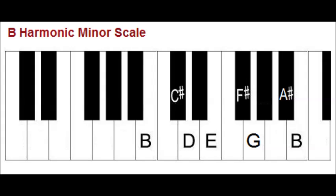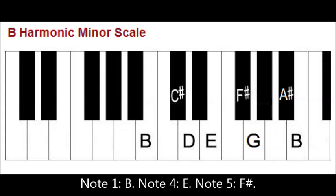The notes of the B harmonic minor scale are B, C-sharp, D, E, F-sharp, G, and A-sharp. Notes 1, 4, and 5 are B, E, and F-sharp.